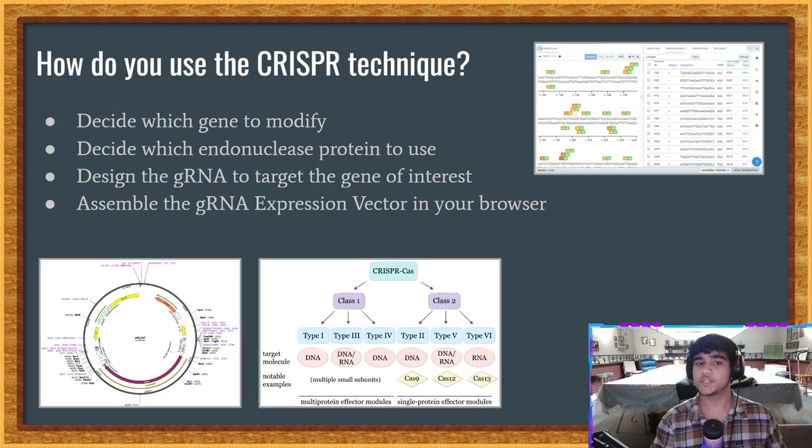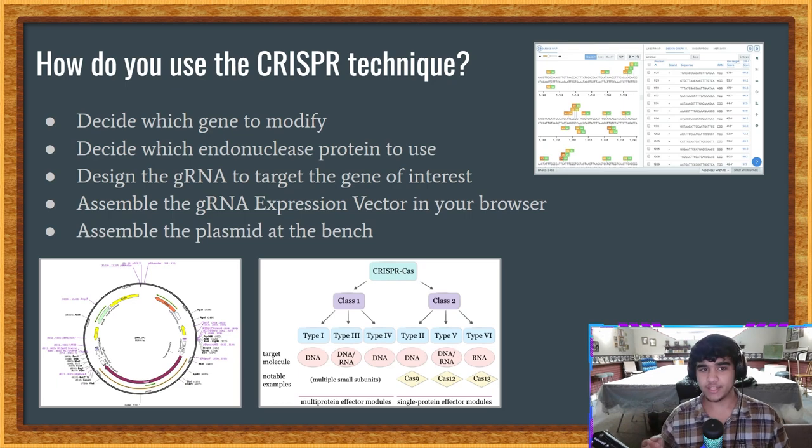And after that's done, they would assemble the plasmid at the bench, which would require things like an expression vector, the gRNA design, restriction enzymes to cut the expression vector, and they would have to generate overlapping DNA sequences, reagents, and et cetera to begin engineering the cells.